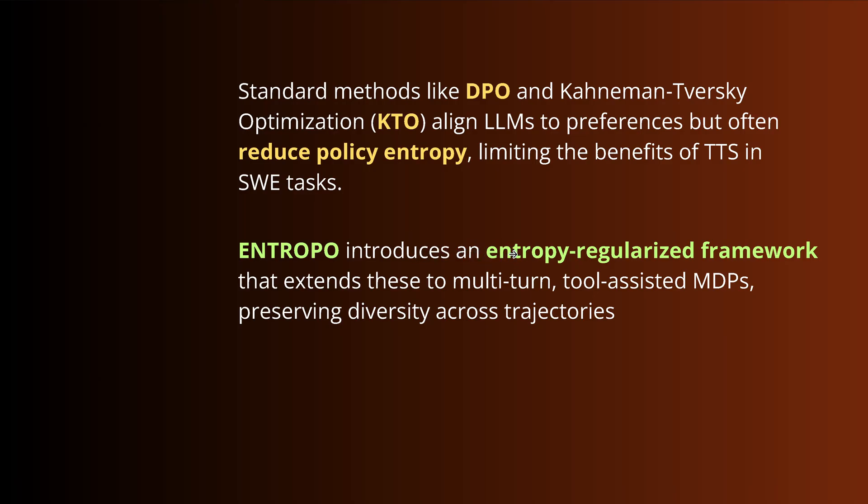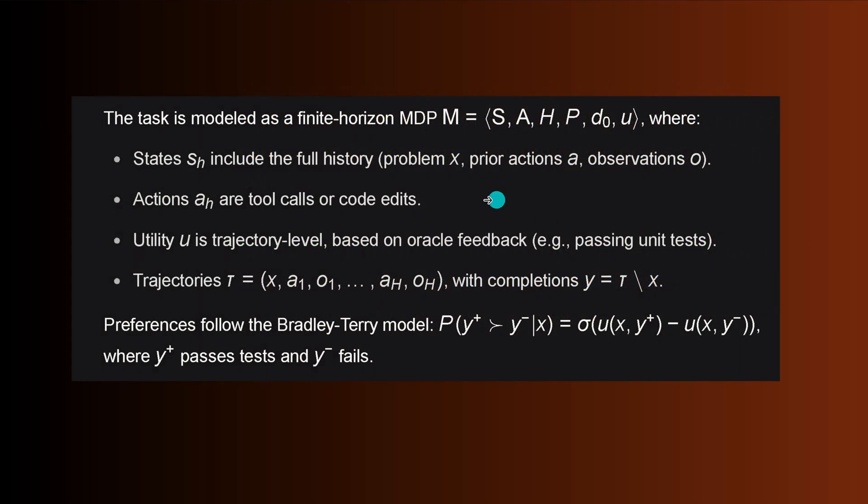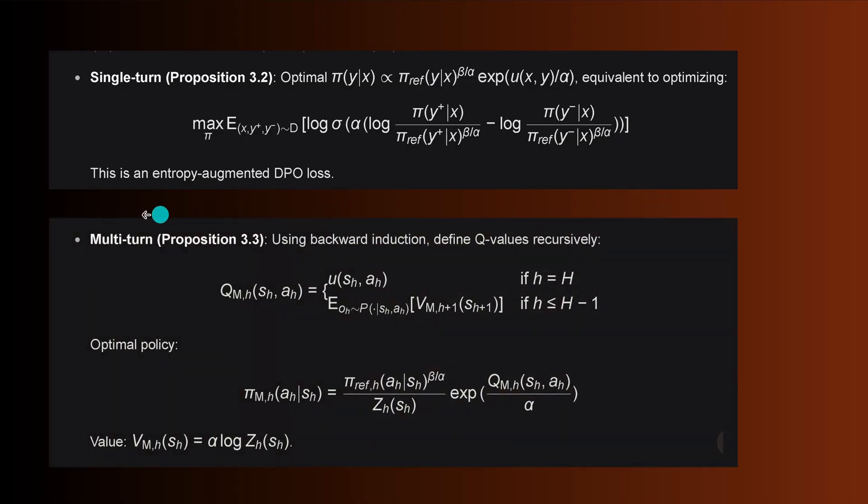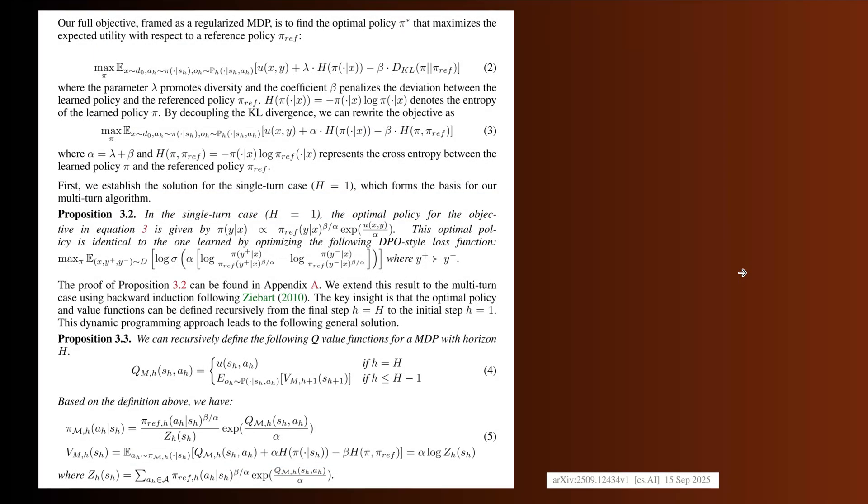The authors did this with an entropy regularized framework that extends to multi-turn conversation plus tool-assisted Markov decision processes preserving the diversity across all the different trajectories we're going to compute in parallel in test time compute. If you're not familiar with Markov decision process, very short summary. What the authors found if they introduce this entropy regularization term, the entropy augmented DPO loss. And if you go with a multi-turn, then you have the particular Q values that are defined recursively. Is this immediately clear? No, because in the paper, they have some really beautiful cases where they showed you exactly for the single-turn case and for the multi-turn case, how they derive this formula.